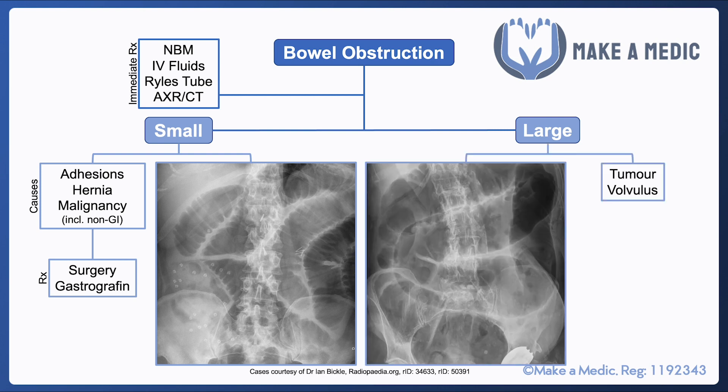With large bowel obstruction, the loops of bowel tend to be towards the outside of the film, and you do not get valvulae conniventes. Instead, you get small pouches called haustra. The common causes of large bowel obstruction are tumour and volvulus. It may be managed surgically, or in the case of a sigmoid volvulus, it can be managed using a flatus tube.